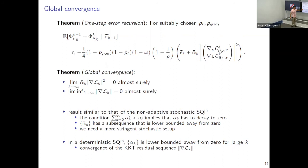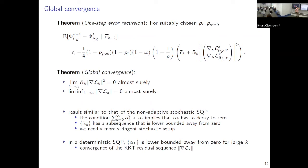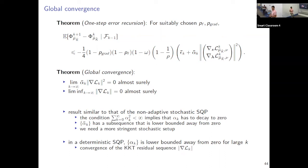Comparing to the non-adaptive stochastic SQP: for that algorithm alpha_k must decrease to zero. For our adaptive algorithm, alpha_k doesn't have to go to zero — it can occasionally increase, with a subsequence lower bounded away from zero. Comparing to deterministic SQP, over there alpha_k is lower bounded away from zero always; here we only have a subsequence, so we can only prove convergence of a limit infimum of the KKT residuals rather than the limit.